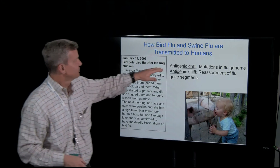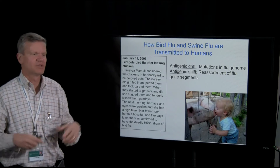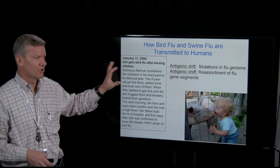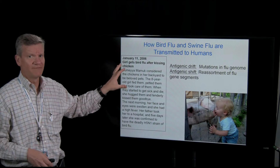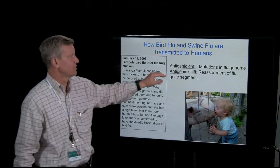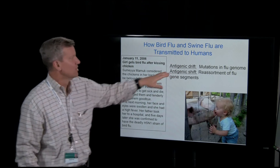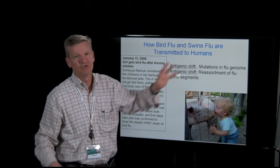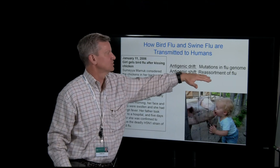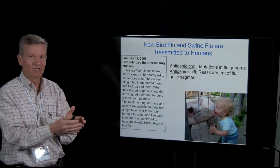Antigenic drift refers to just mutations in the flu genome. RNA-dependent RNA polymerases are not good at fixing mutations — unlike DNA polymerases — so RNA polymerases make lots of mutations. These cause small changes here and there in the flu genome, but they're not nearly as serious as antigenic shift, which is actual reassortment of the gene segments of influenza.